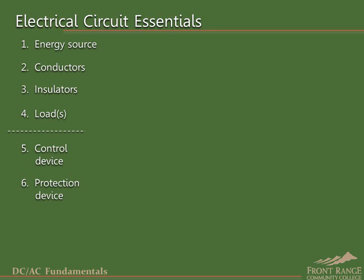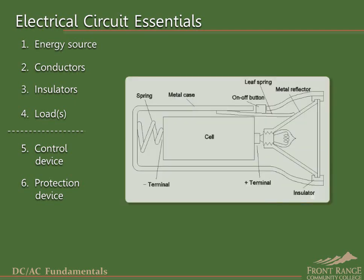As an example of a simple circuit — a circuit that has only one source and one load — consider the familiar flashlight. Here is a cross-sectional drawing of the flashlight. We'll see that it includes all four essential elements of an electric circuit plus a control device.